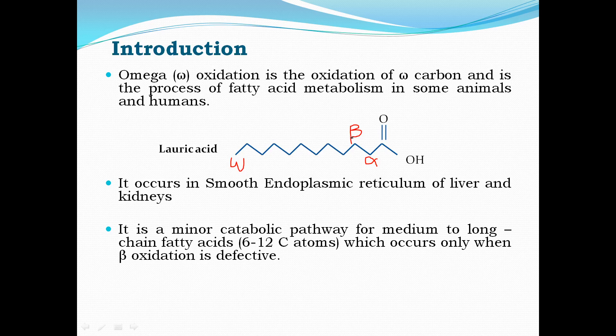Omega oxidation is a minor catabolic pathway for medium to long chain fatty acids, and it occurs only when beta oxidation is defective — that is, due to either mutation or due to a carnitine deficiency.